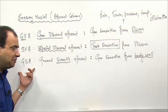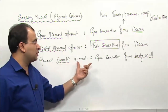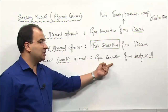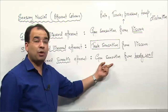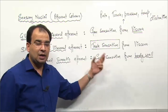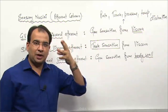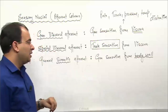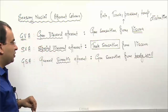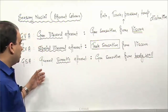General somatic afferent - general sensation from the body wall, not from the viscera. For example, from the face, the trigeminal nerve is carrying all those general sensations. That is one example of the general somatic afferent column.